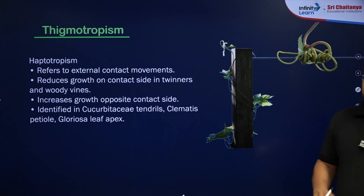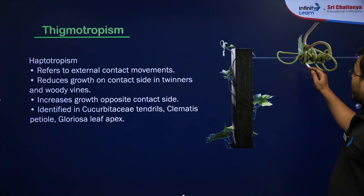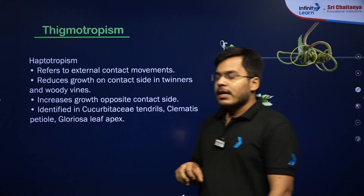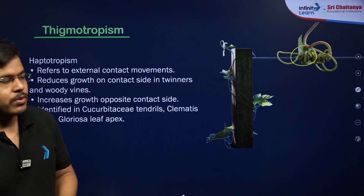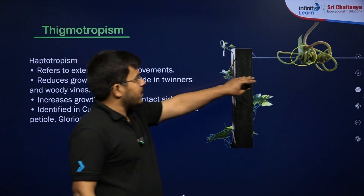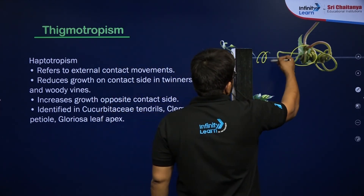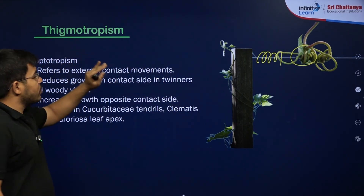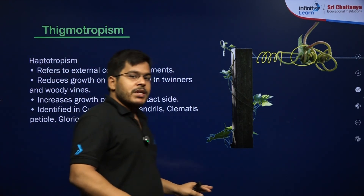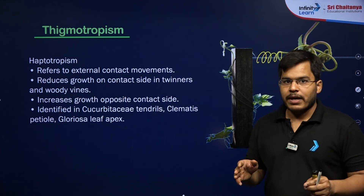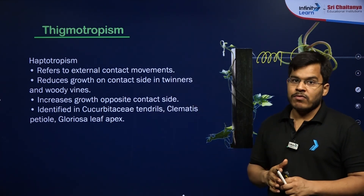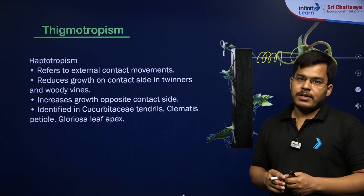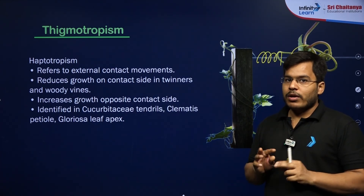Thigmotropism is movement in relation to touch. Plants have tendrils — spring-like structures that provide support to plants with very tender or soft stems. These tendrils touch a support and wrap around it to give support to the plant. This is a thigmotropic movement. In all these tropic movements, growth of the plant is involved and a signal from outside causes plant parts to move towards or away from it.